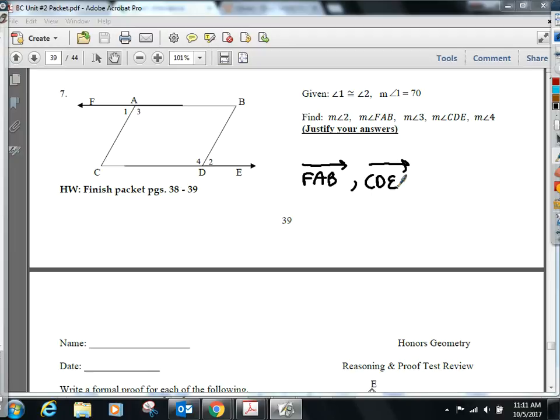So what did we get for angle two? Angle one was 70, so angle two must've been 70, substitution, congruent angles are congruent, probably substitution there. What about FAB now that we know it's a straight line? 180. How about angle three? 110, linear pairs are supplementary. Then how about CDE? 180. And then angle four? 110. Linear pairs are supplementary.